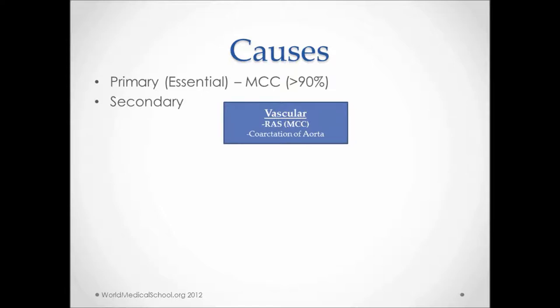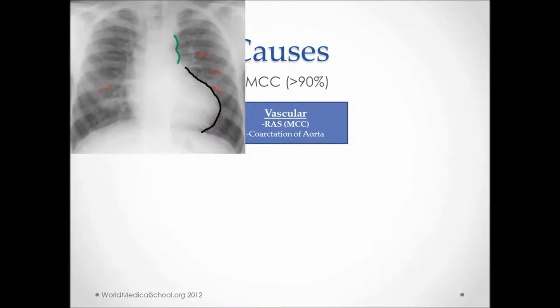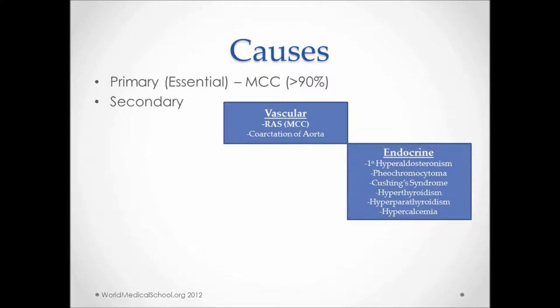Vascular causes: RAS, or renal artery stenosis, is the most common cause of secondary hypertension. It can be diagnosed by listening for an abdominal bruit. Here's a contrast study showing a stenosed renal artery on the left and normal on the right. This x-ray shows coarctation of the aorta. Rib notching can be seen in ribs 5 to 8 bilaterally, there's cardiomegaly, and a figure of 3 sign can be noted in the left upper mediastinum. Coarctation of the aorta can also present as unequal blood pressure in upper and lower extremities.